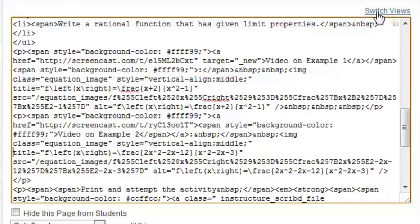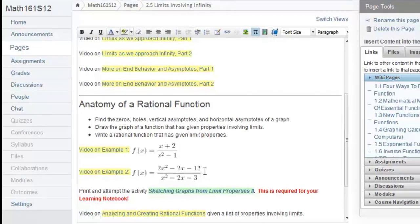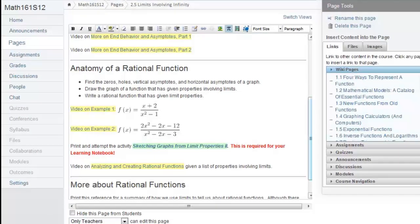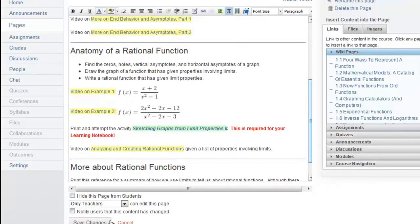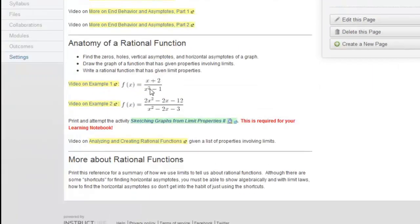So now when I switch back to the WYSIWYG view—the 'what you see is what you get' view—you should see that the equations are aligned nicely. And I should be able to save this. And you'll see that these equations now align vertically the way they're supposed to.